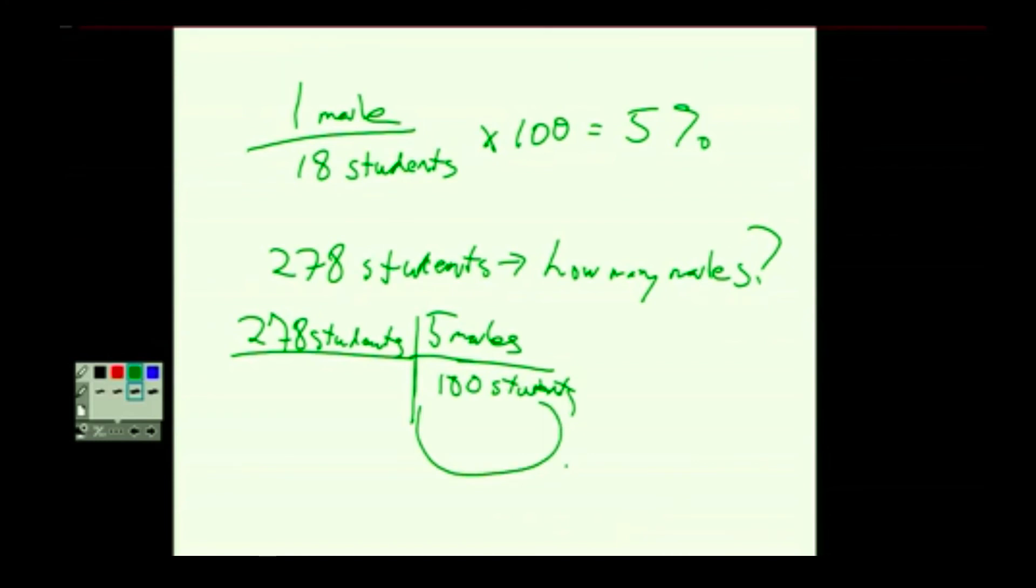This is my percentage, right? This came from right here. 5 males for every 100 students. Okay? That's what percentages tell you. Parts out of 100. So how many males would I have in 278? 15 males.